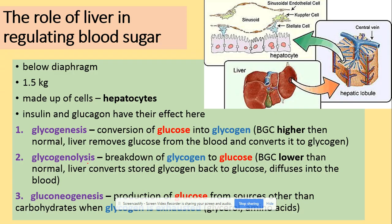We will finish this video by looking at the role of the liver in the regulation of blood sugar concentration. The liver is located below the diaphragm, is around 1.5 kilograms, and is made of cells called hepatocytes. Insulin and glucagon are hormones which also act on the liver. The first process to know is glycogenesis — the conversion of glucose into glycogen — which takes place when blood glucose concentration is higher than normal. Converting glucose to glycogen, a storage polymer molecule, lowers the concentration of glucose in the blood.